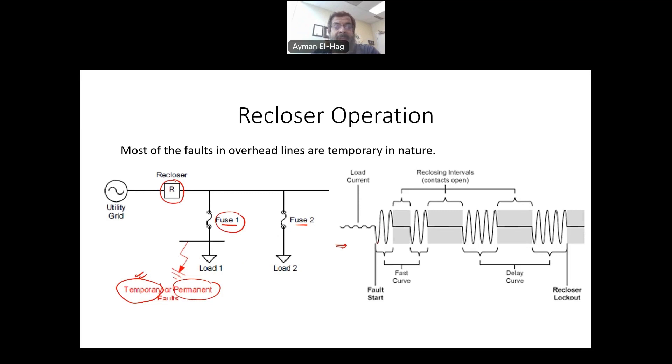So at the beginning of the operation of the Recloser, the Recloser is the primary protection system, the fuse is the backup protection system. So it does that usually two times: open, close, open, close very, very fast. So if the fault cleared by itself, then the fuse is not melted and the system will restart the operation without any problem.